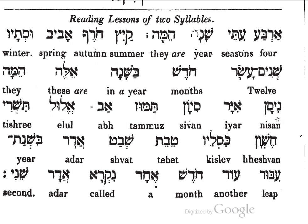Nisan, Iyar, Sivan, Tamamuz, Ab, Elul, Tishri, Cheshwan, Kislev, Tebet, Shabbat, Adar. Pishnat Nibbur — God Chodesh nikra Adar Sheni.